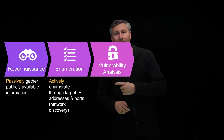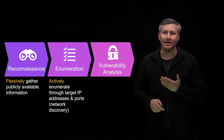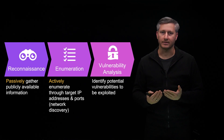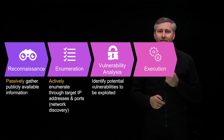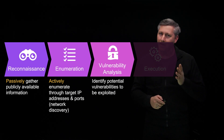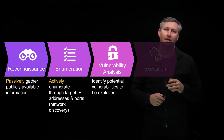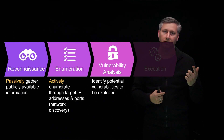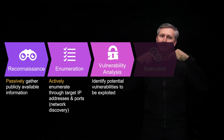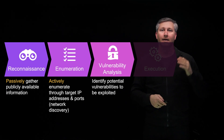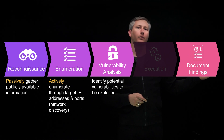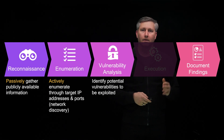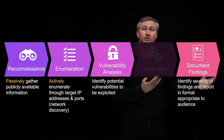Step three is vulnerability analysis. In this step, you are attempting to figure out what potential vulnerabilities the targeted system might have. The next step, execution, does not actually apply to vulnerability assessment. In a vulnerability assessment, you skip the execution step and go straight to reporting potential vulnerabilities — you'd only do the execution step in a penetration test. Therefore, step four of the vulnerability assessment process is documenting findings, where you're reporting on potential vulnerabilities and their severity.